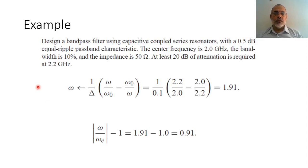In the previous video, we have seen how to design a capacitively coupled resonator filter for a bandpass filter. In this video, we are going to work through an example for such a bandpass filter. It is required to design a bandpass filter using capacitive coupled series resonators with 0.5 dB equal ripple band.